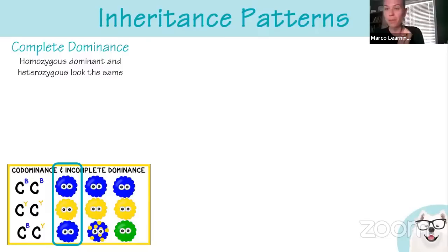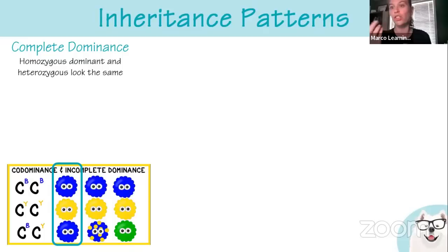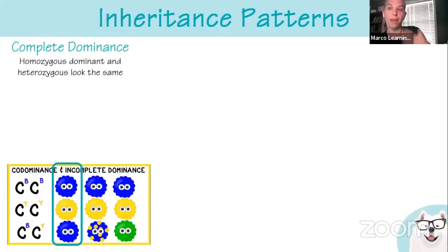With complete dominance, the dominant allele is going to mask or cover up the recessive allele. The allele codes for a protein that is seen, or the recessive doesn't make a protein or has a non-functional protein. With complete dominance, the homozygous dominant and the heterozygous will look the same — having one dominant allele creates enough protein for the desired phenotype.